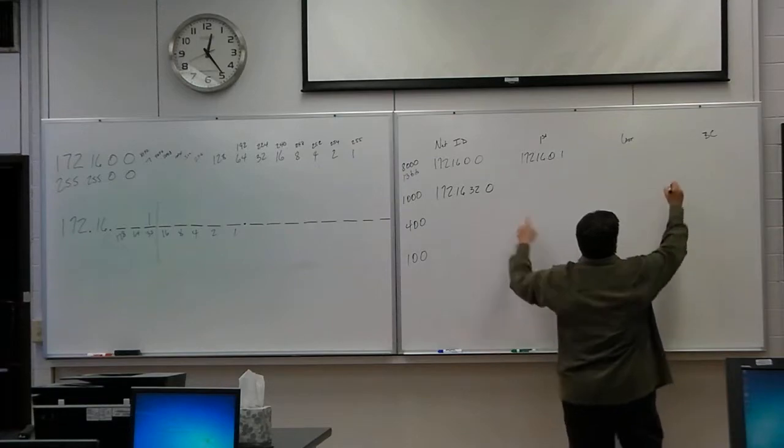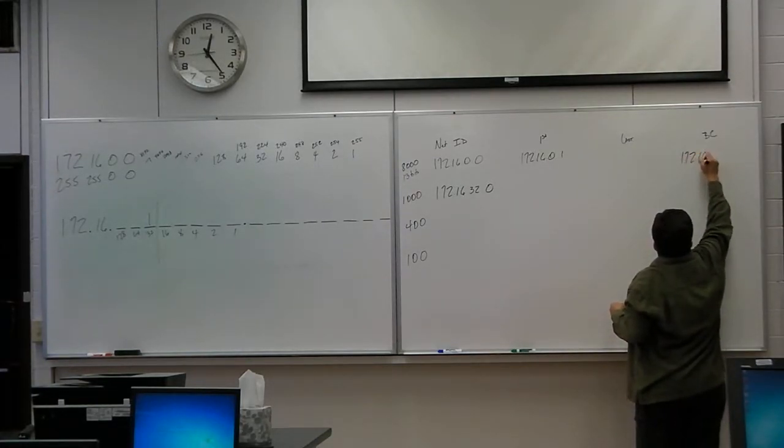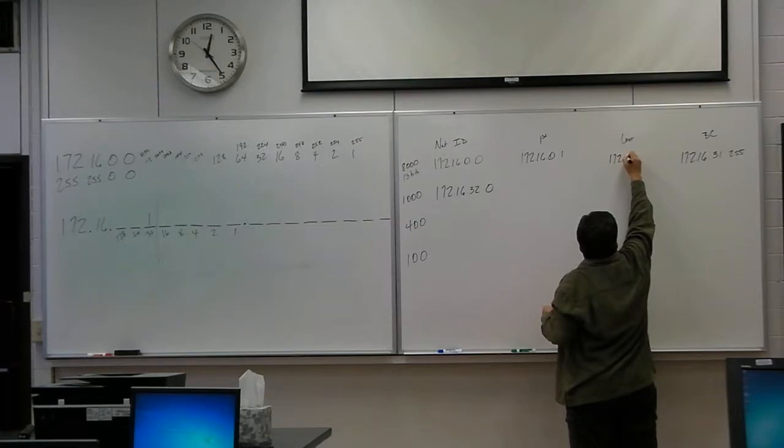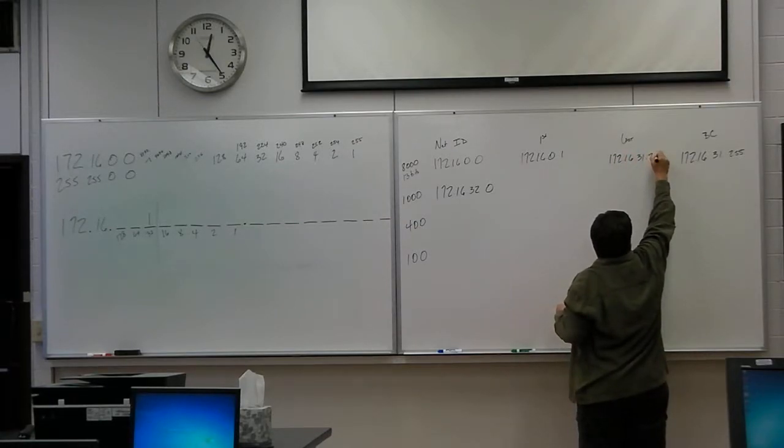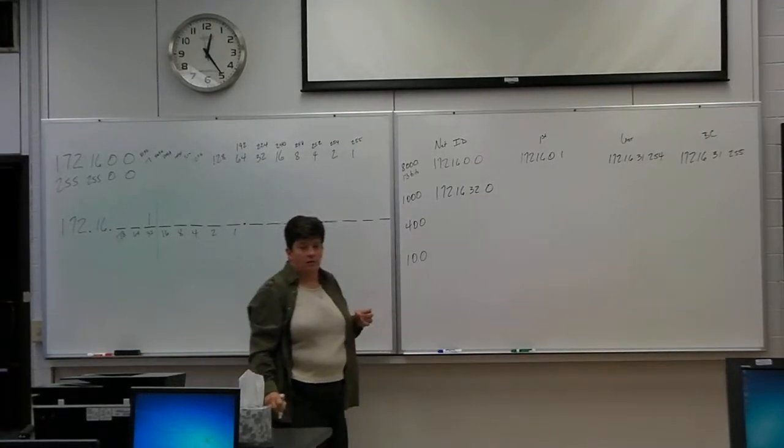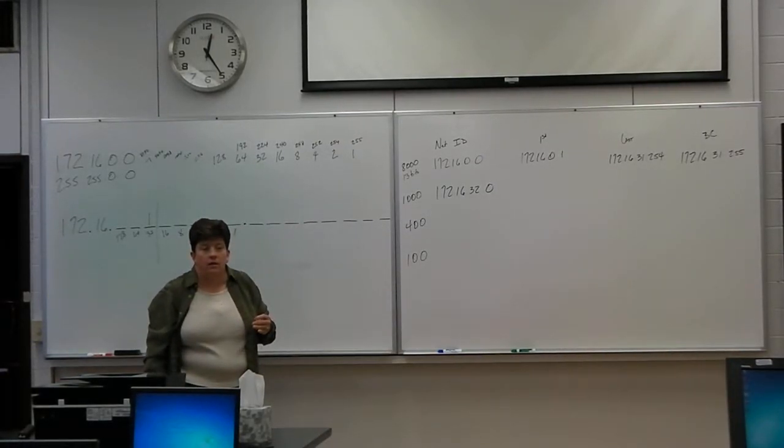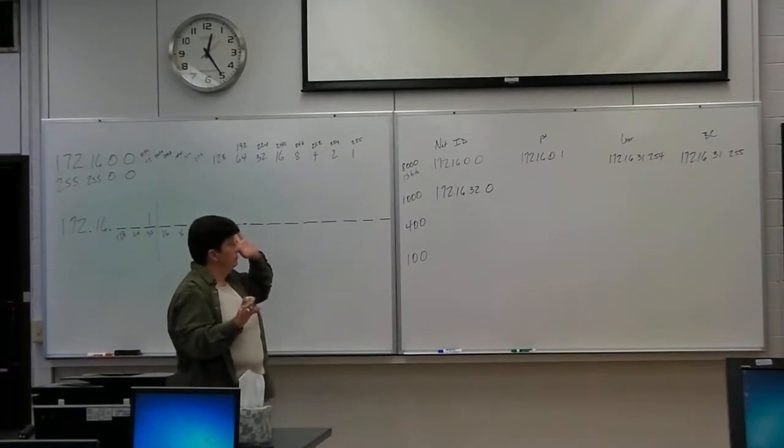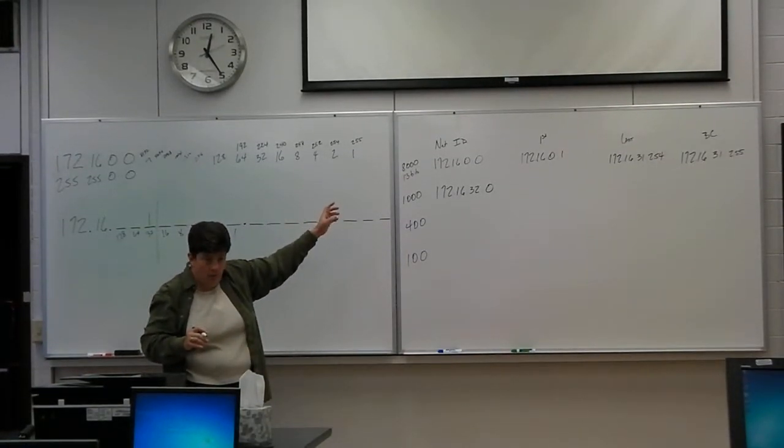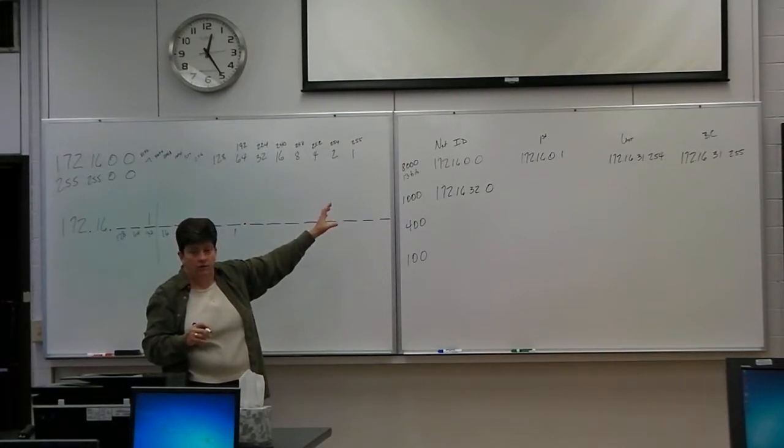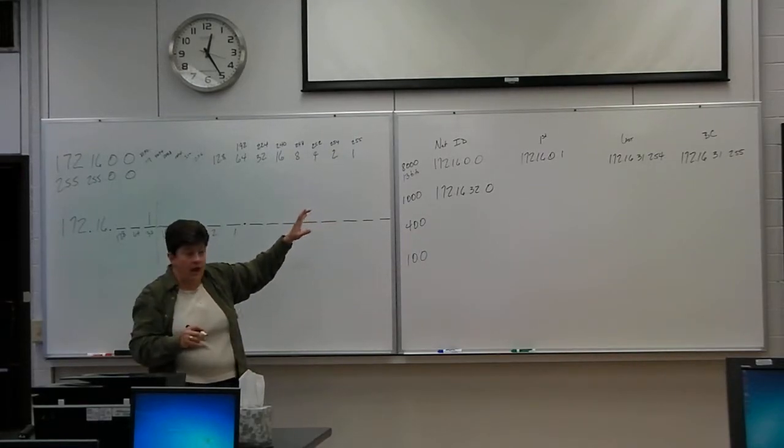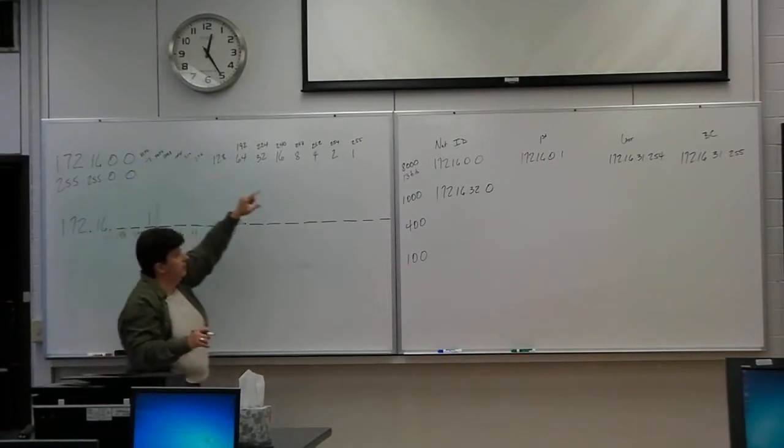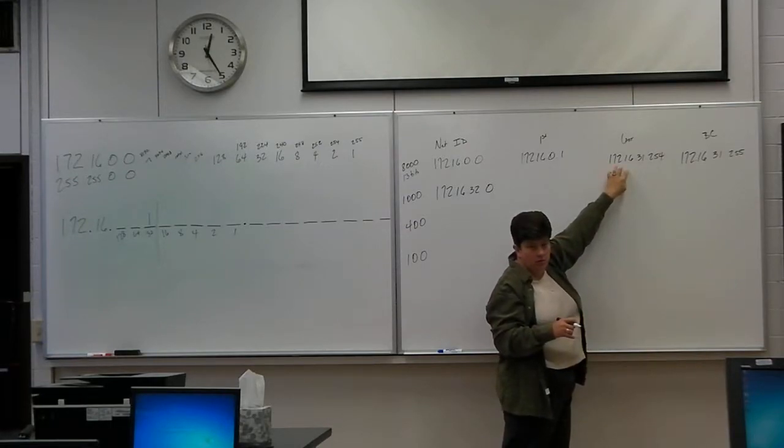So now I can, 172.16.31.255. Now sort of stop your brain right there. You solved that subnetting problem. You gave me a network with at least 8,000 hosts on it. It actually is going to have 8,190 usable hosts between here and here.